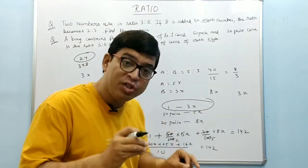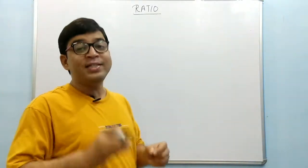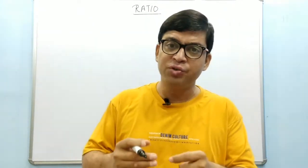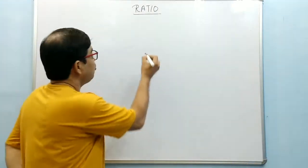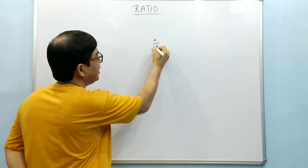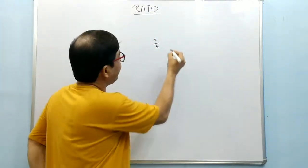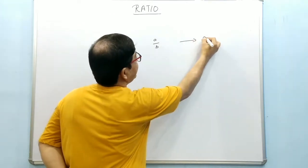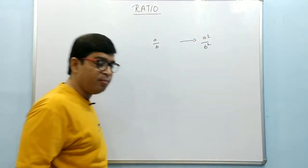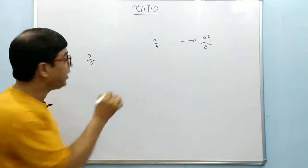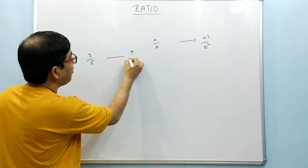Now we will see the composition of ratios — how to convert ratios into other terms. Suppose a ratio is a to b. The duplicate ratio means the square, so the duplicate ratio will be a squared by b squared. For example, if the ratio is 3 is to 5, the duplicate ratio is 9 by 25.